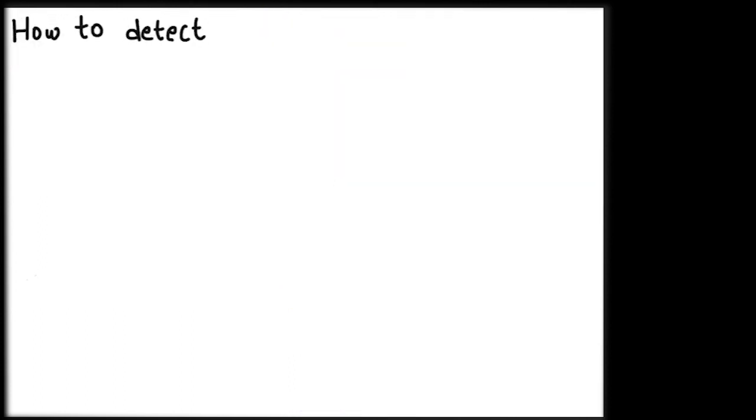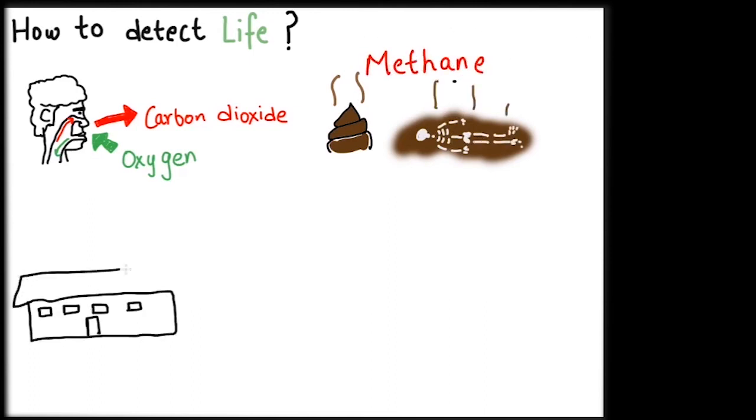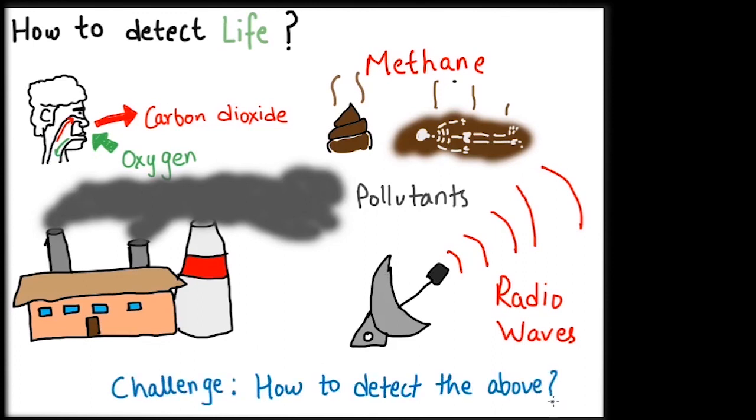But how will we know for sure that a planet has life harboring in it? The activities of a life form like breathing, decomposing, etc., would result in chemical signatures of compounds released in these processes like methane and carbon dioxide. If the life form is advanced and is capable of industrialization, we would see the effects of pollution caused by them through chemical signatures too. These kinds of civilizations will also communicate using radio waves, which is one of the ways their presence can be ascertained.